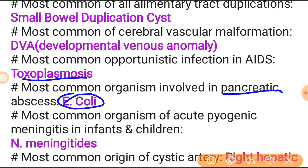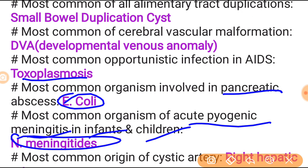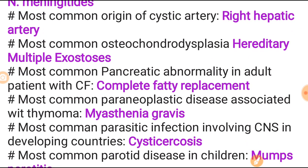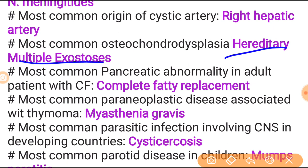Most common organism involving pancreatic abscess is E. coli. Most common organism in acute pyogenic meningitis in infant and child is Neisseria meningitidis. Most common origin of the cystic artery is the right hepatic artery. Most common osteochondral dysplasia is hereditary multiple exostoses. Most common pancreatic abnormality in the adult presenting with a clean complete fatty replacement.